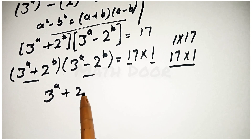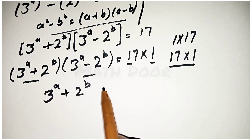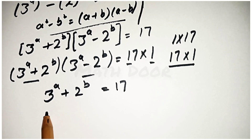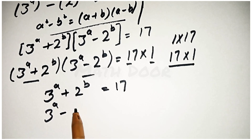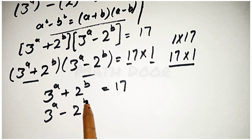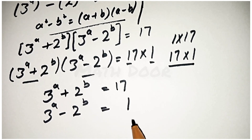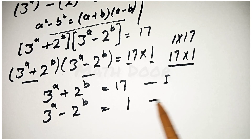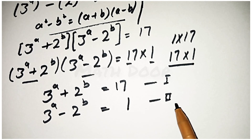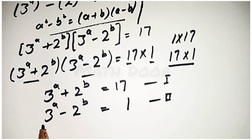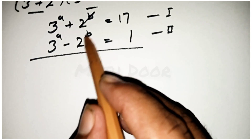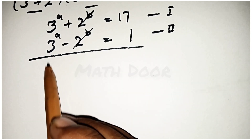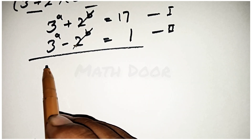So we write: 3 power a plus 2 power b is equal to 17 — this is equation one — and 3 power a minus 2 power b is equal to 1 — this is equation two. Now we add these two equations; the 2 power b terms cancel, giving us 2 times 3 power a equals 18.